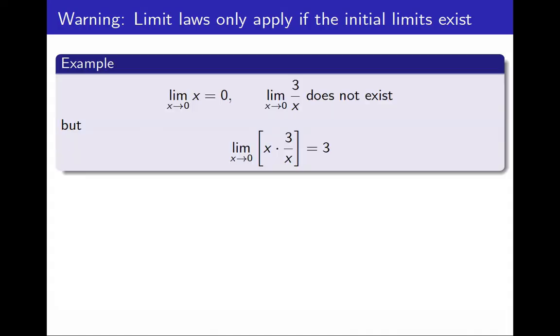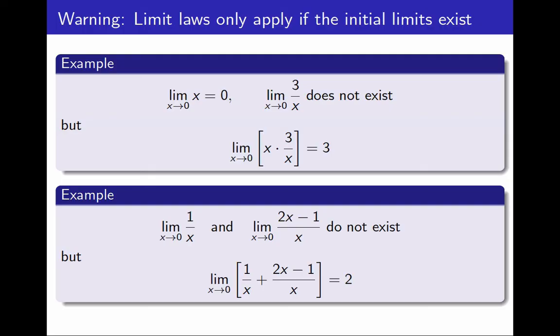For example, the limit as x approaches 0 of x is 0, the limit as x approaches 0 of 3 over x does not exist, but their product has a limit. So 0 times does not exist is, who knows, could be anything. Or in this other example, the function 1 over x does not have a limit at 0, the function 2x-1 over x does not have a limit at 0, but their sum has a limit. If this confuses you, pause the video and write a little bit of the algebra, and then it will become clear.